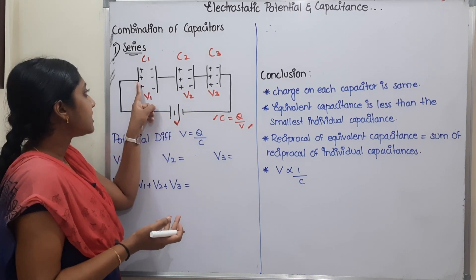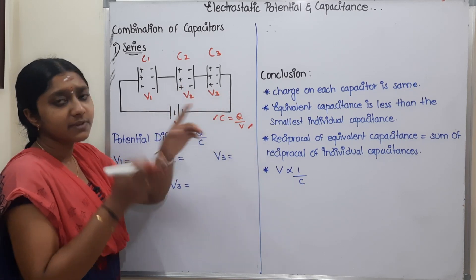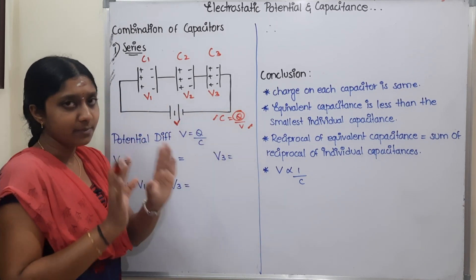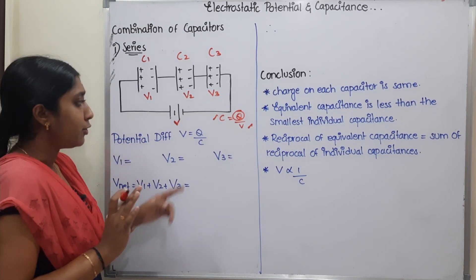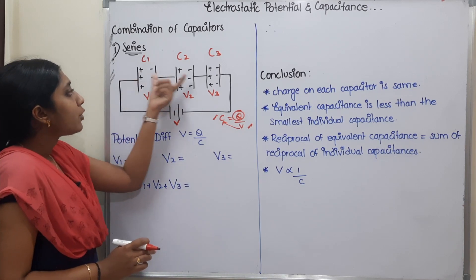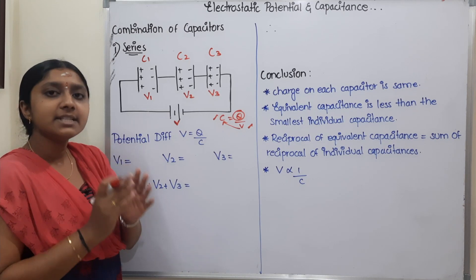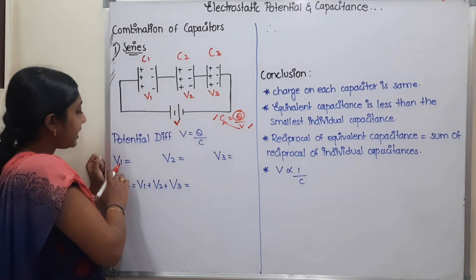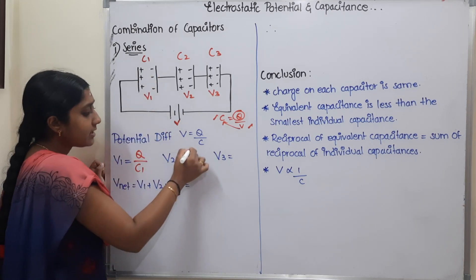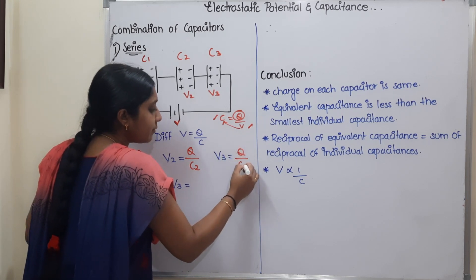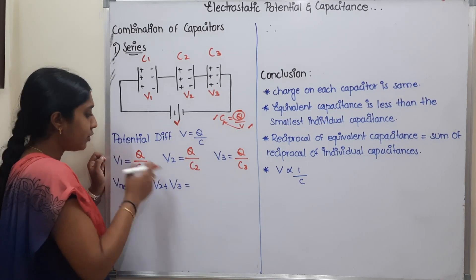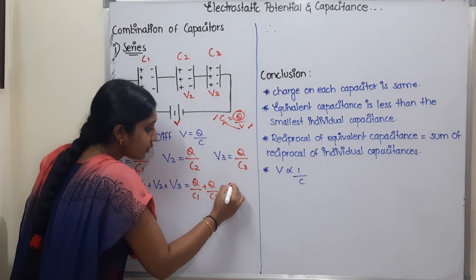For example, if plus 5, then minus 5, plus 5, minus 5 — the charge value is the same throughout the series. Since charge Q is the same, let's calculate the potential difference. The formula is V = Q/C. For each capacitor: V1 = Q/C1, V2 = Q/C2, V3 = Q/C3. The total potential difference is the sum: V = Q/C1 + Q/C2 + Q/C3.